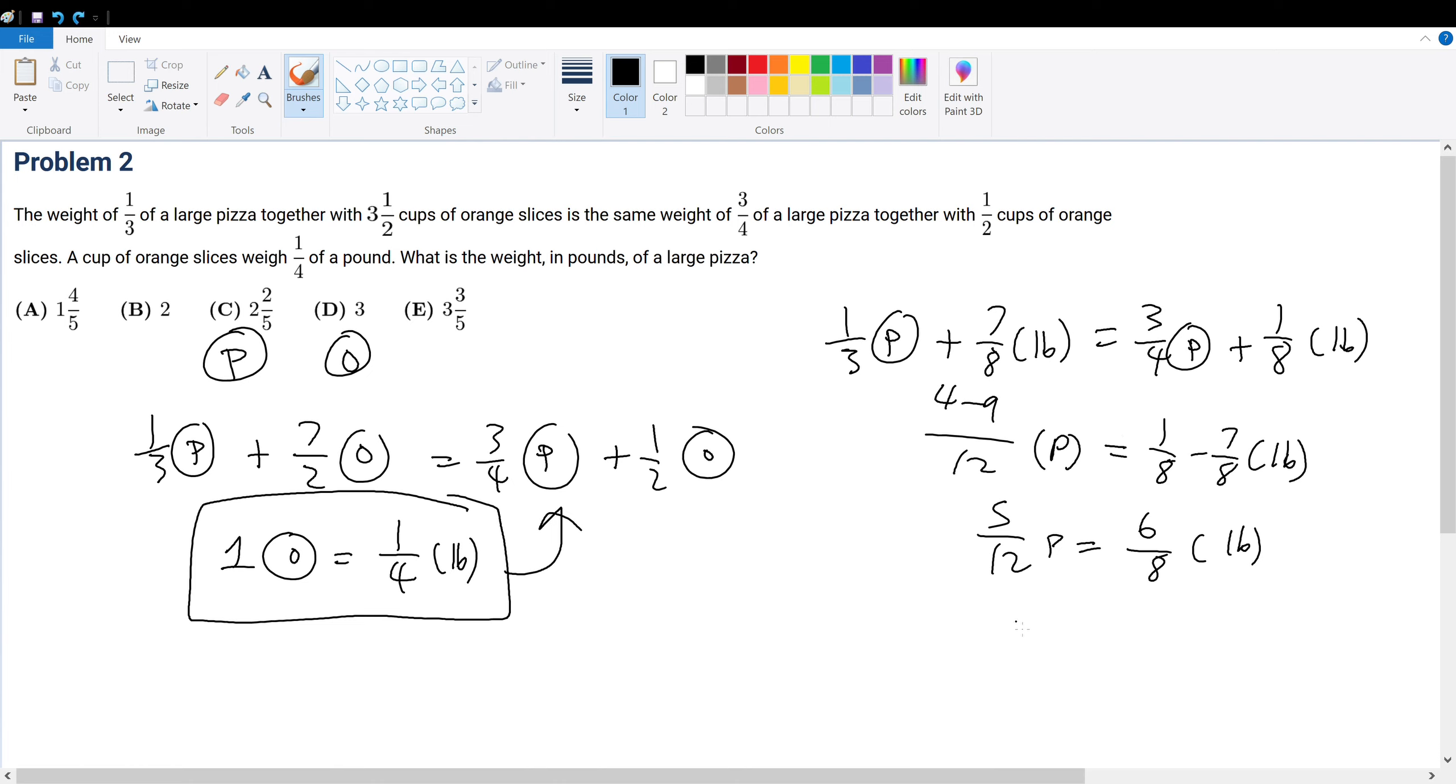Therefore, one large pizza is equal to six over eight times twelve over five pounds. This divided by two... divided by four is two, divided by four is three, therefore we get eighteen over ten. Eighteen over ten is the same thing as nine over five.